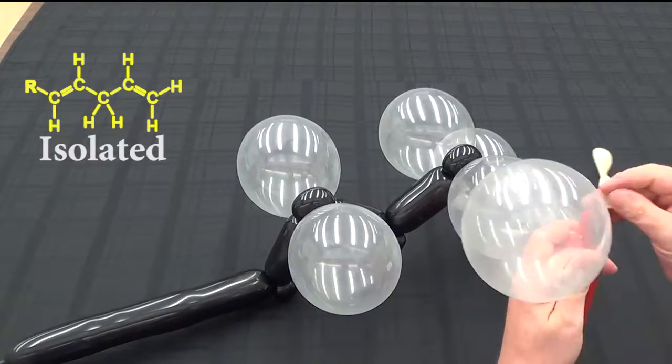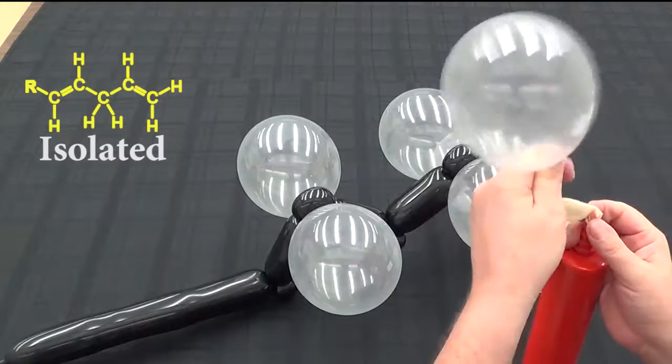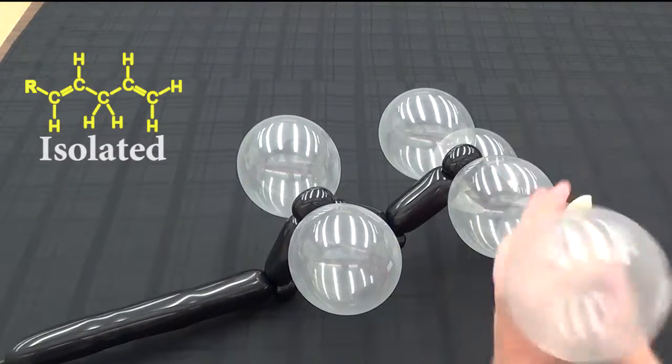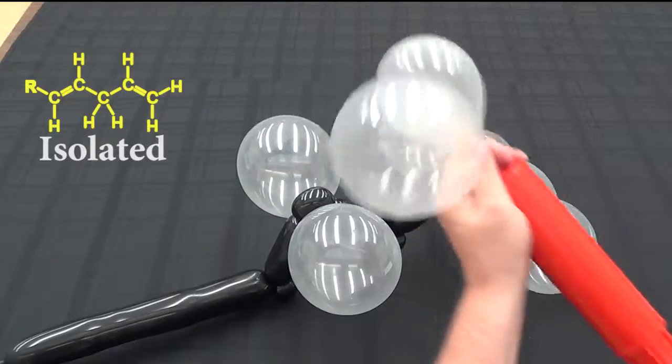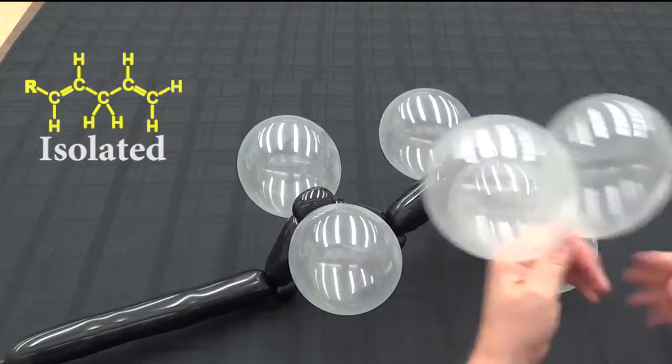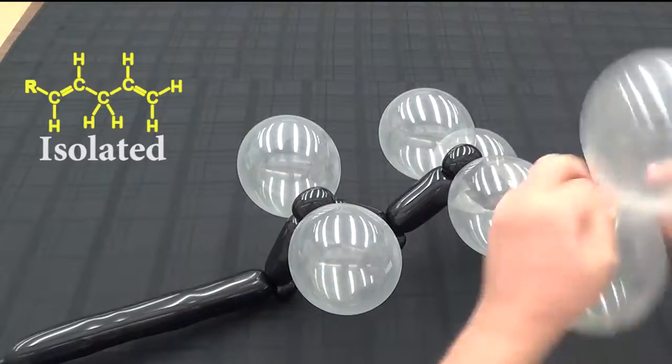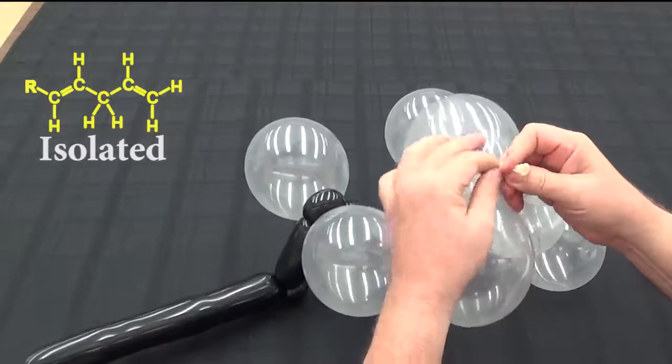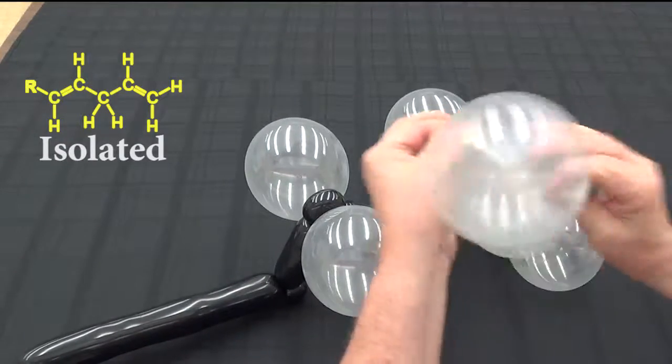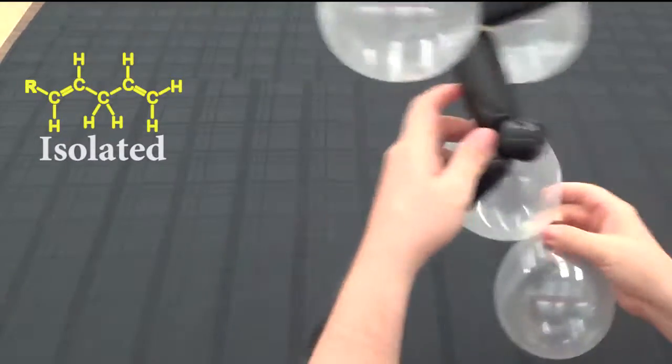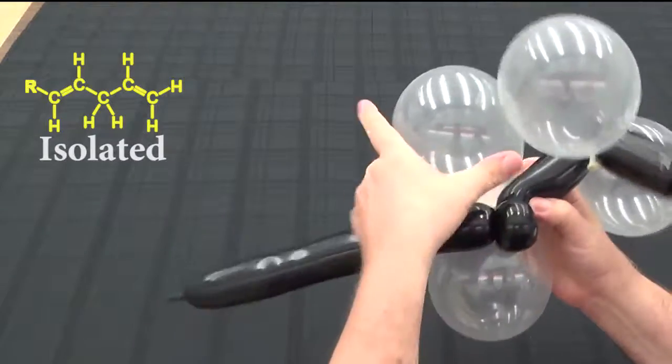Again, our last set of balloons represents the other carbon and its p-orbital. It's going to interact to form the pi system. So again, we tie that together. And we put that in place at position five.